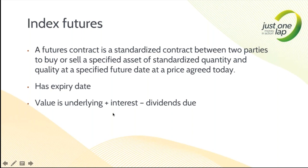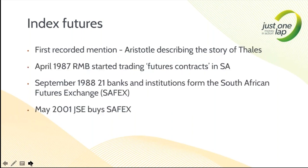We can crunch the numbers. The question is the interest rate and the dividends that are due. Different folks will use a different interest rate — we can estimate it. Some dividends we know, the rest we need to make an assumption. For example, a dividend that might only be declared in November and paid in December will be in this contract, so we don't know about it. I don't stress the fair value — I'm trading the points. Futures have been around forever. Locally, RMB kicked it off in 1987.